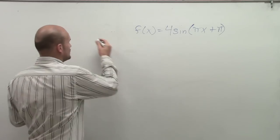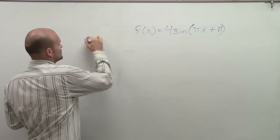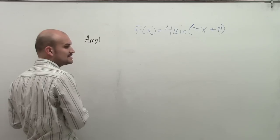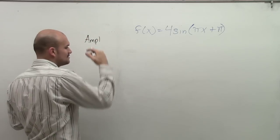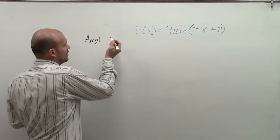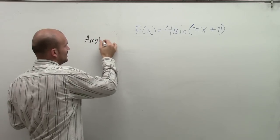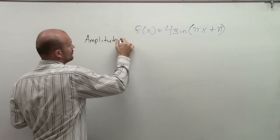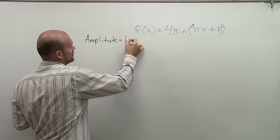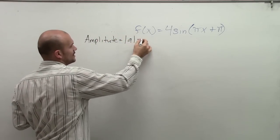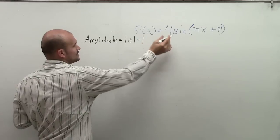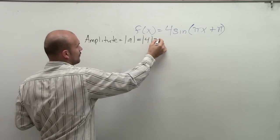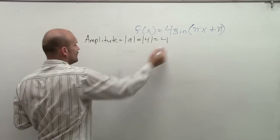The first thing we always want to look into is our amplitude. Our amplitude is going to be the half distance between the maximum and the minimum point of our graph with the y value. The formula for amplitude is the absolute value of a, which in this case a is 4. So the absolute value of 4 is equal to 4.